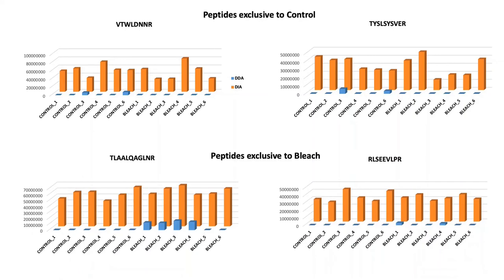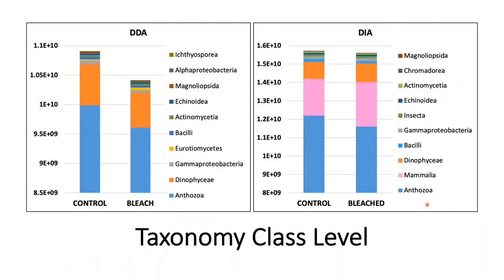This made us realize that it is important to get extensive DDA data to make better biological conclusions. Currently we have DDA data with a lot of identifications but with missing values, and DIA data with fewer missing values but also fewer identifications. Ideally we would like to have data with more identifications and fewer missing values. As expected, Anthozoa, which is coral, and Dinoflagellata, the symbiote, are the two major classes in both DDA and DIA. However, we do find Mammalia in DIA, which could be due to our DIA data not being complete, so we need to improve on this.